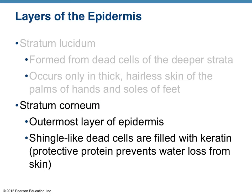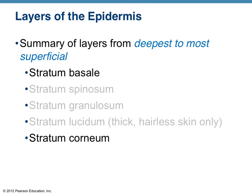The other epidermal layer you need to be familiar with is called the stratum corneum. This is the outermost layer — these are the cells filled with keratin, the ones on the outermost layer of the skin that you can actually see. So you need to know the stratum basale and stratum corneum. There are some other layers that are a little beyond the scope of what we're going to do in this class, so you need to know these two.